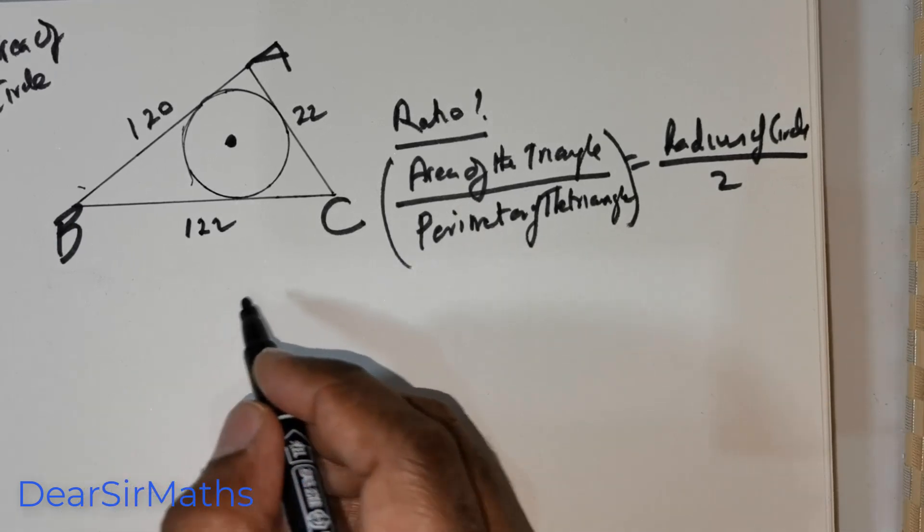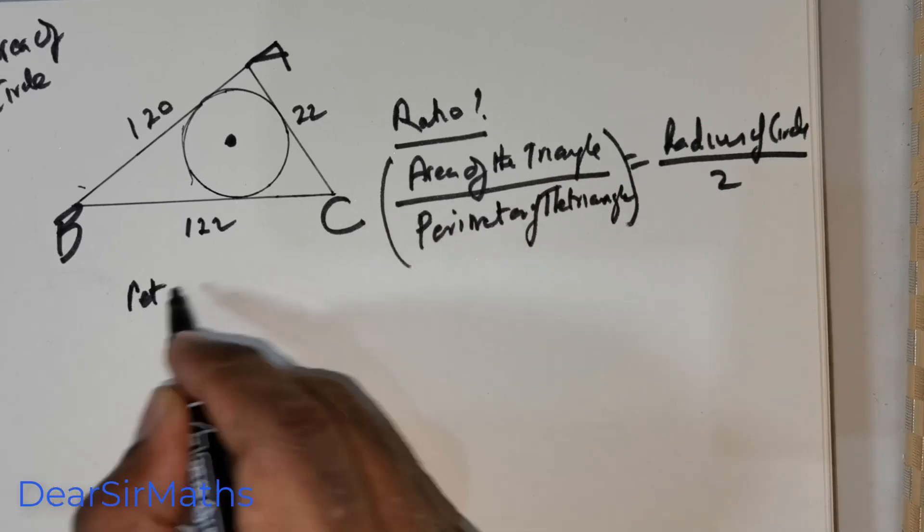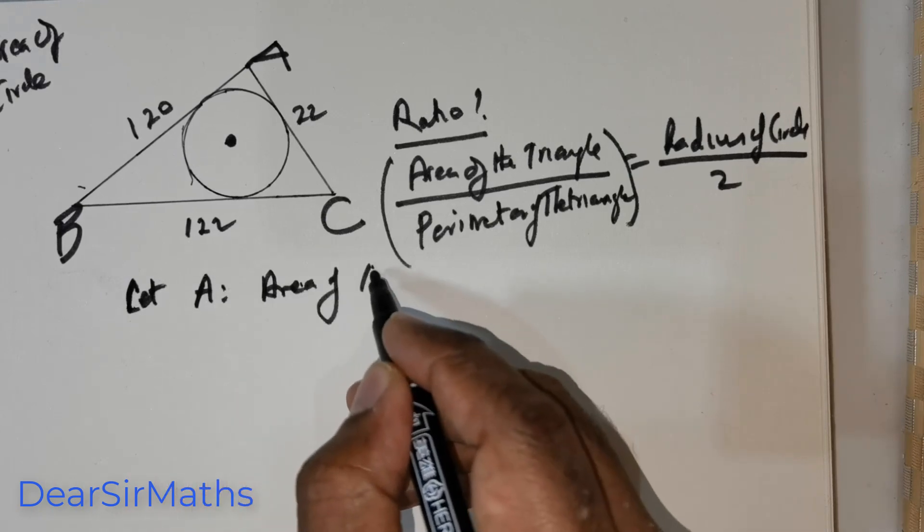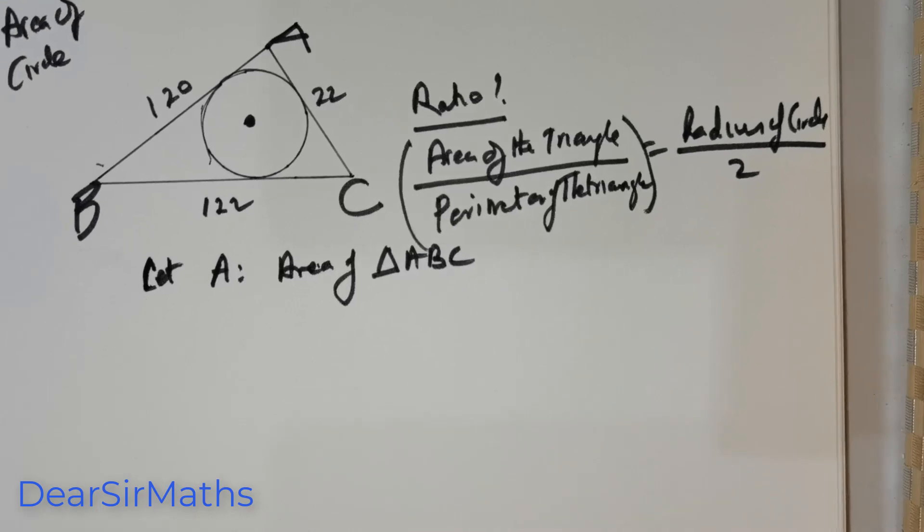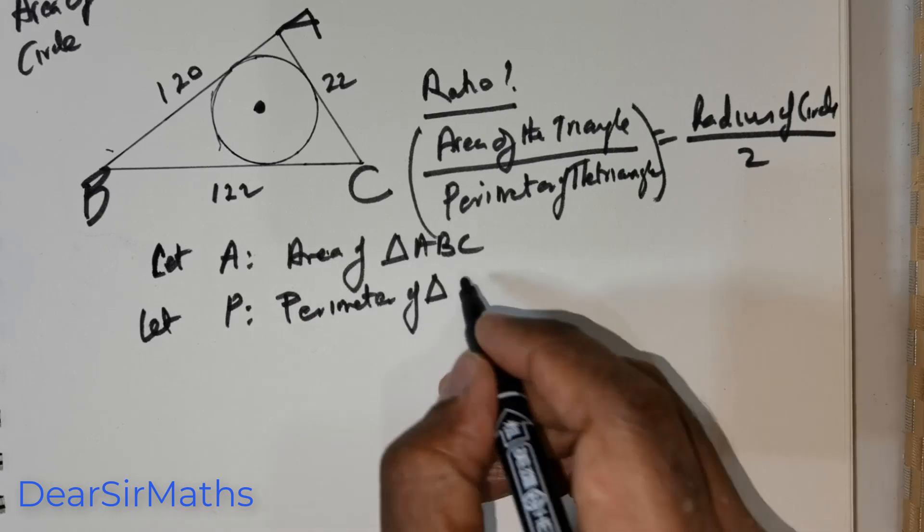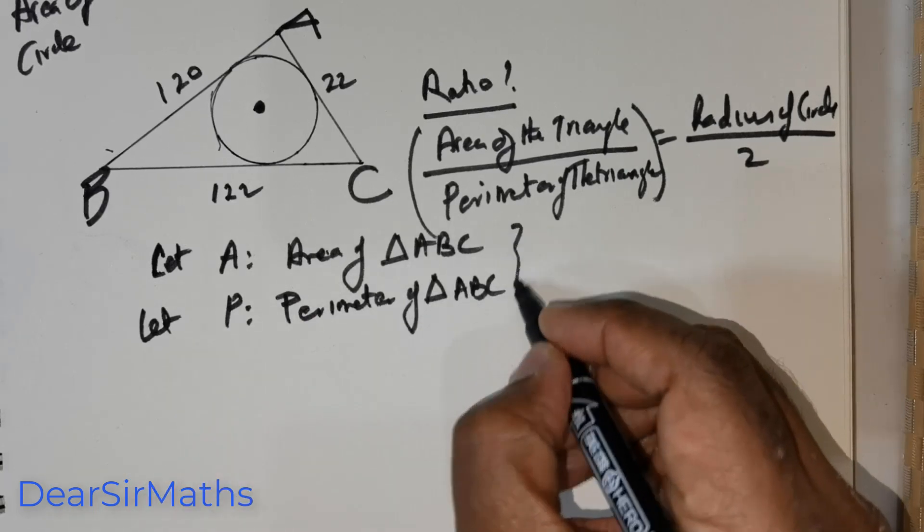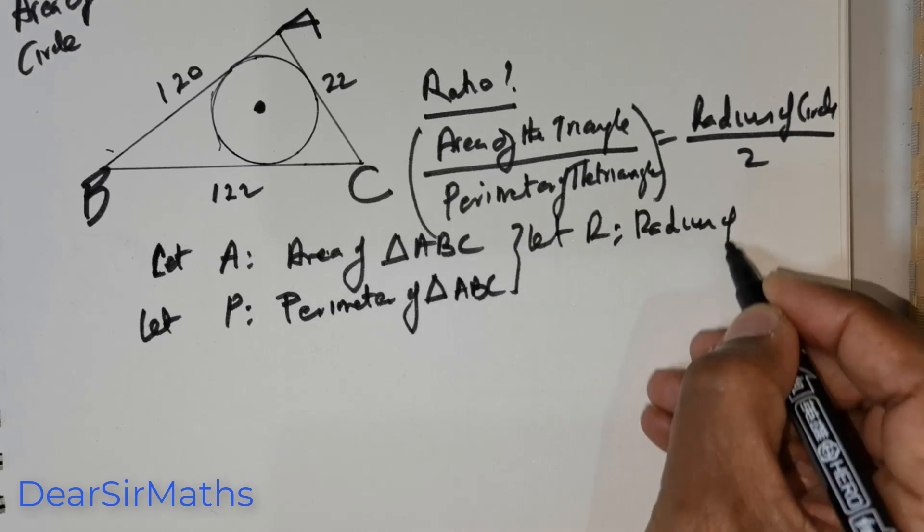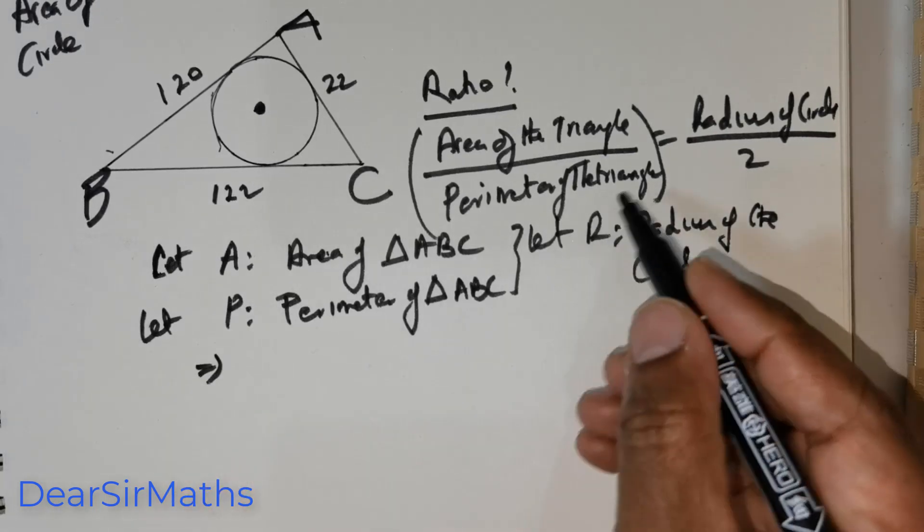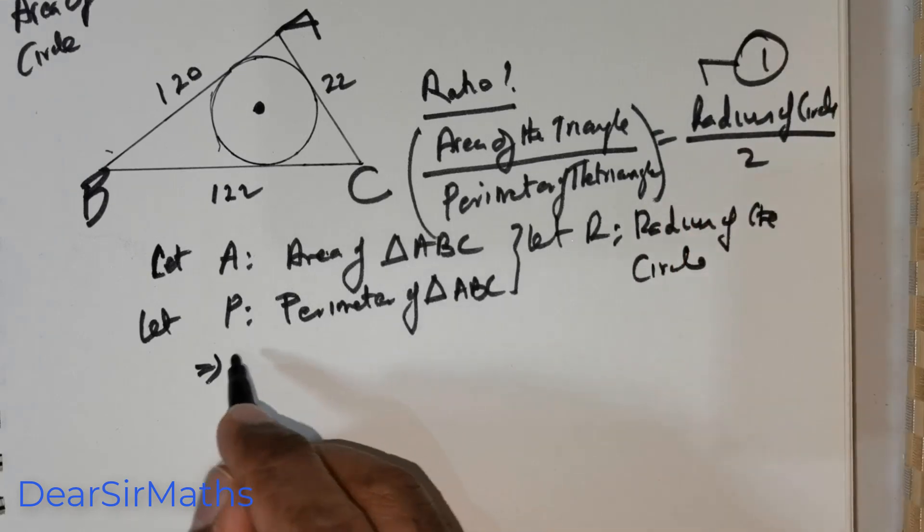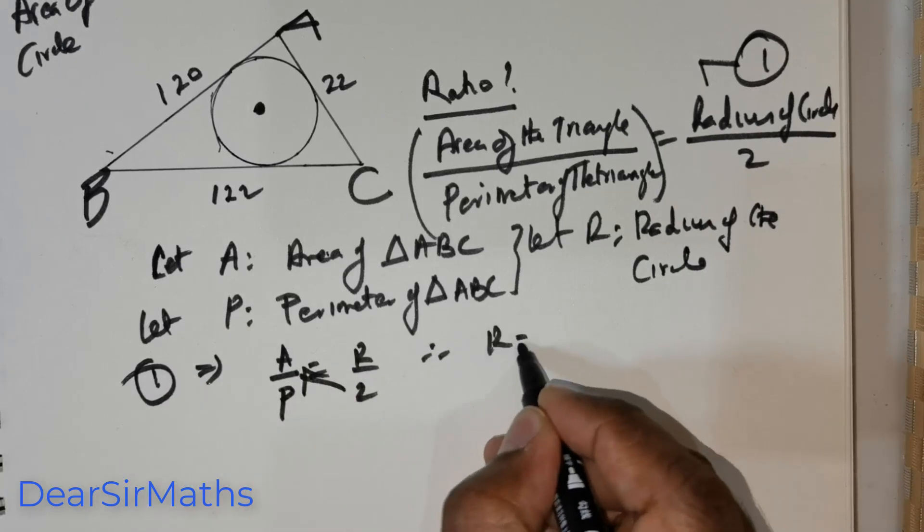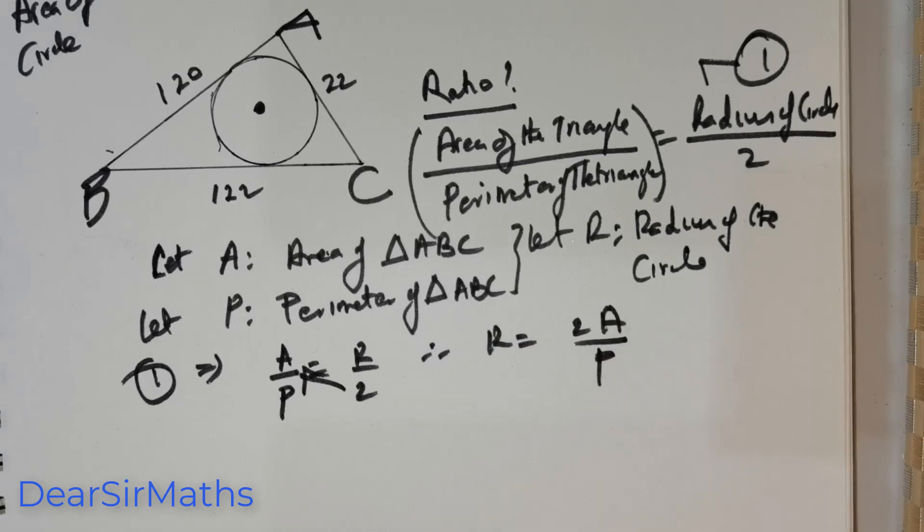Now clearly, what I am going to do is, first, let me write that down. Let A be the area of triangle ABC and let P be the perimeter of triangle ABC and then let R be the radius of the circle. So, this means, if I were to take this as equation 1, it will be A over P equals R over 2. You cross multiply, you get R equals 2 times A over P, right?